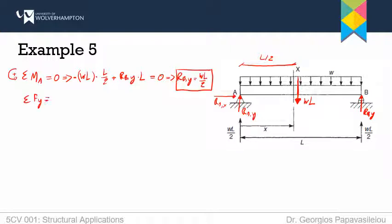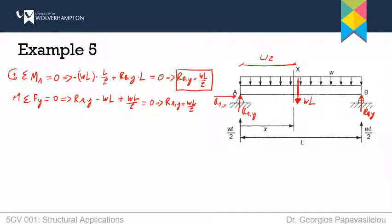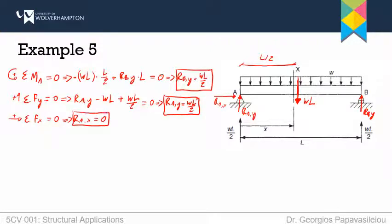Now I can go to the sum of forces in the Y direction, which has to be equal to zero. I will assume that the ones pointing upwards are positive, so RAY minus WL plus RBY — which I already know, so I will substitute it right now — plus WL over 2 equals zero. So if I solve for RAY, this is WL over 2 also. Finally, the sum of forces in the X direction has to be equal to zero. RAX has to be equal to zero because I do not have any other horizontal force in my free body diagram. Now I have calculated all support reactions and I am ready to start calculating internal forces.